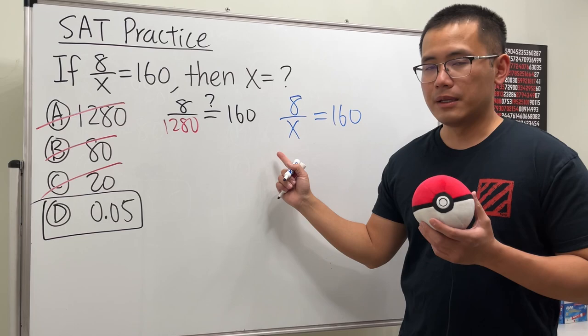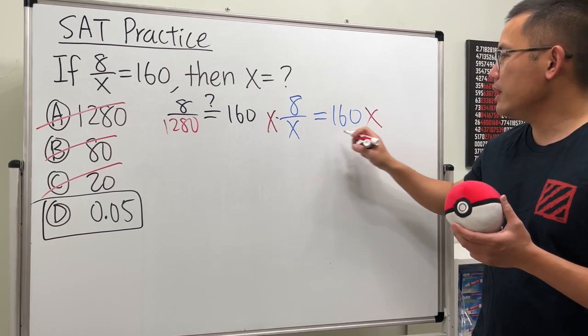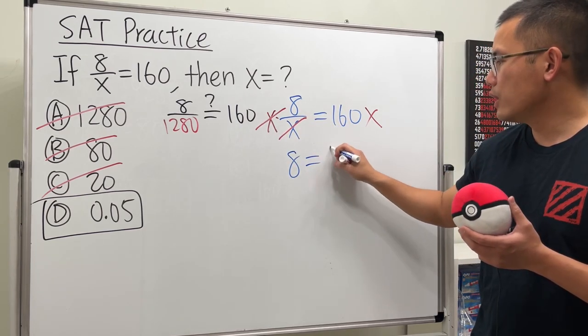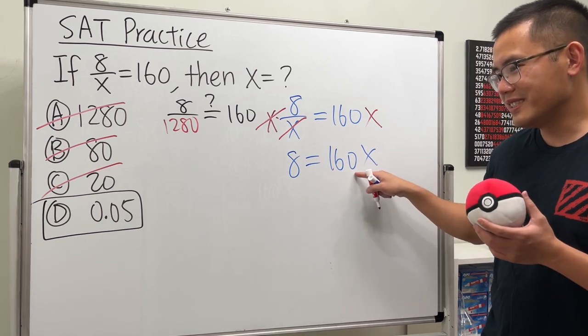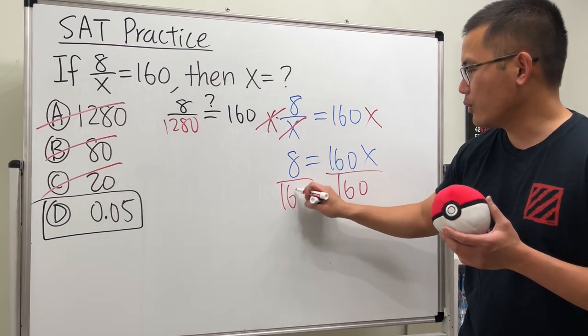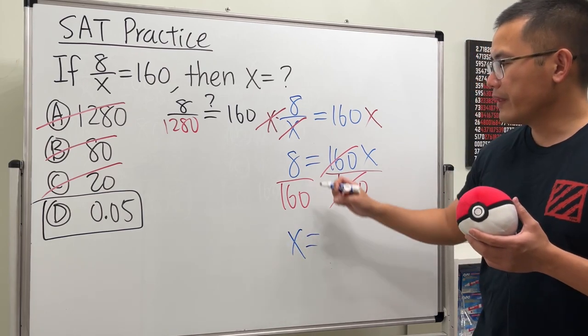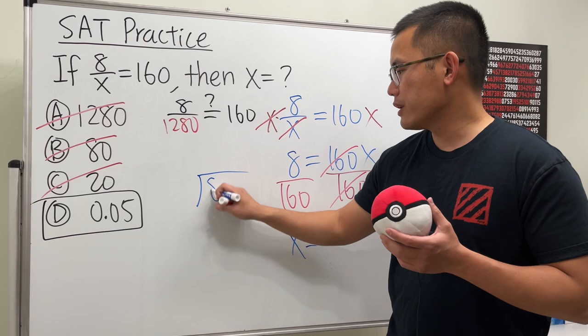You see the x is on the bottom, so what we can do is just multiply both sides by x. That way we can cancel, cancel, and we are talking about 8 equals 160x. And then this is 160 times x, so we divide both sides by 160 like so. Therefore this and that can cancel, and we get x is equal to 8 over 160.